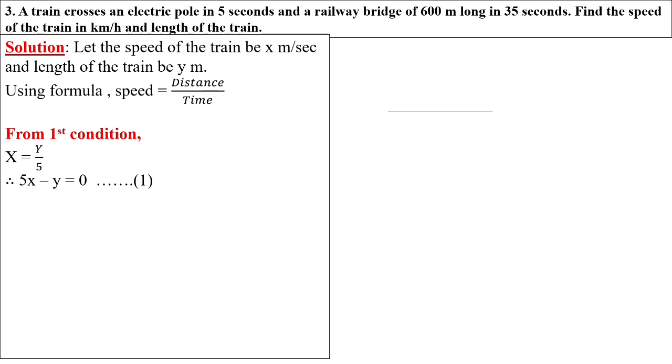Five will go to the left side and multiply: 5x. The y becomes minus y equals zero. That is equation number one.